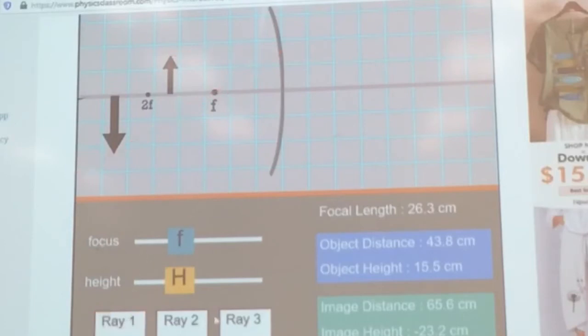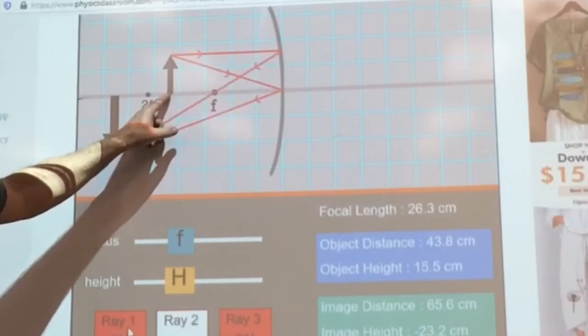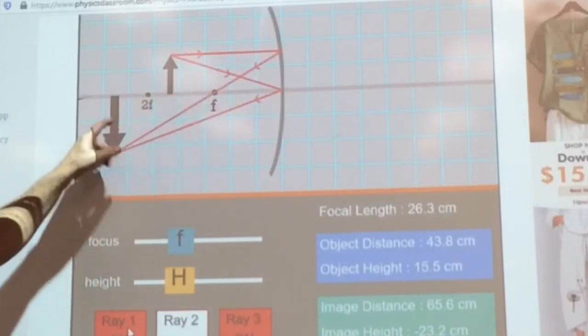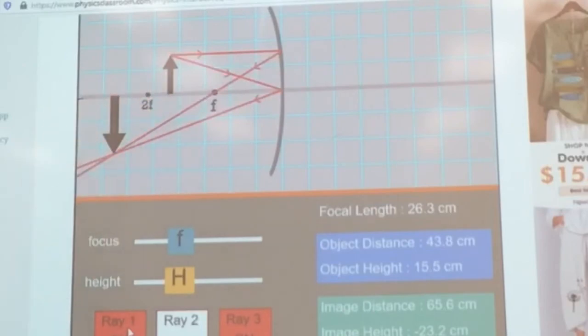The second ray goes into the center and out of the center at the same angle, and where these two touch, notice now they're touching way out here. So if you have something in this location between F and 2F, you end up with a large version of what that object is. It gets enlarged here. Okay?